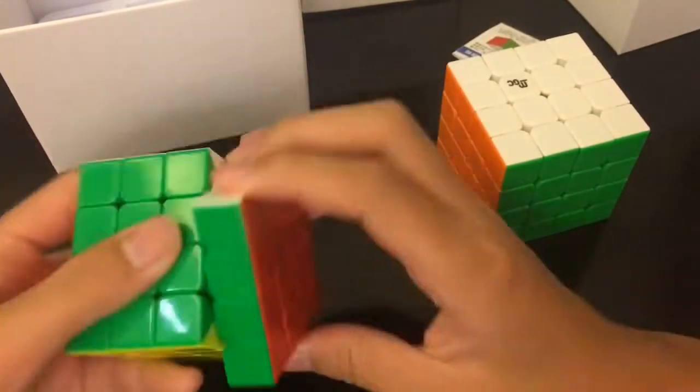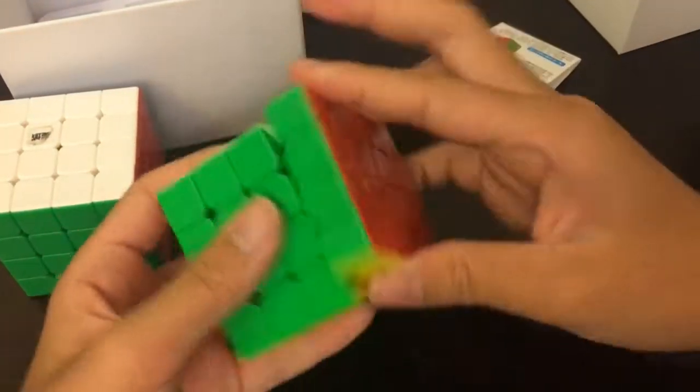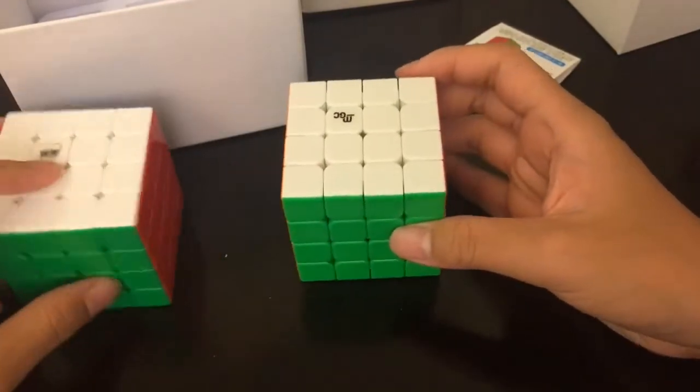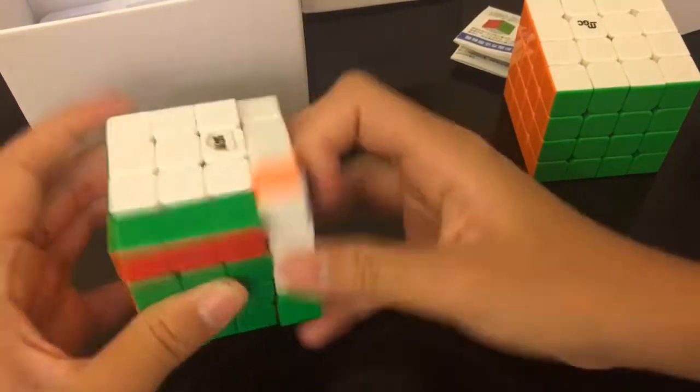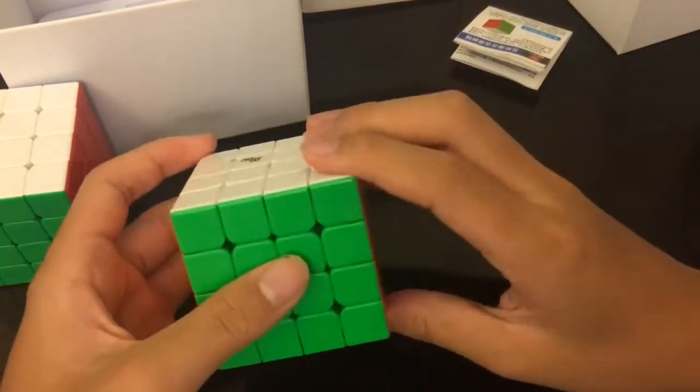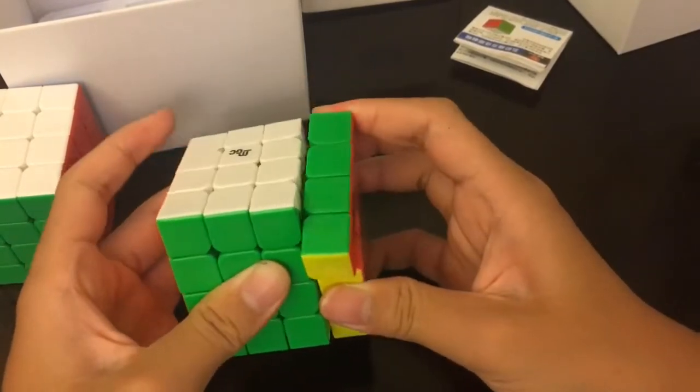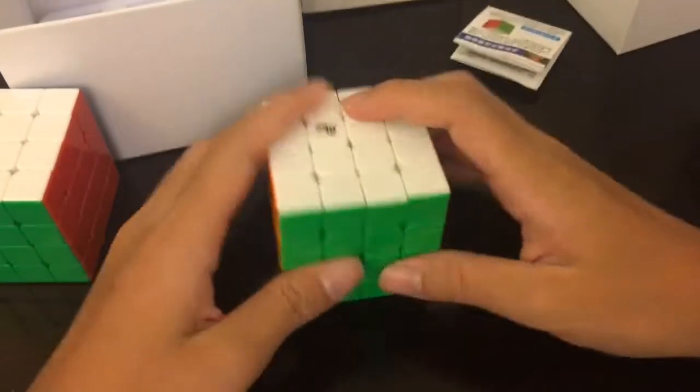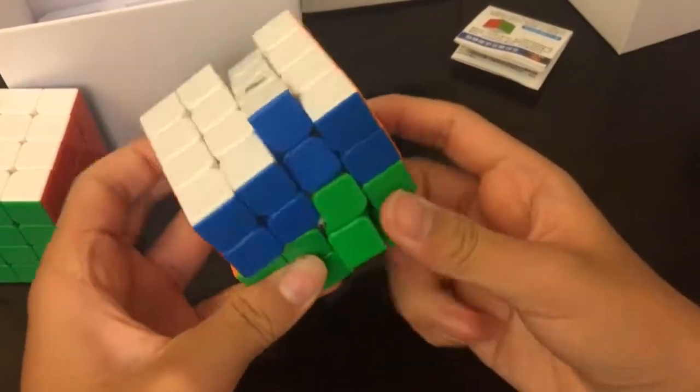Compared to the best 4x4 on the market right now, the AOCHUANG WRM, there are a few similarities and differences. The MGC 4x4 is definitely a lot faster than the AOCHUANG WRM, but it's a bit uncontrollable, just a little bit. The WRM is smoother to turn and easier because of better corner cutting. MGC 4x4, sometimes if you don't turn accurately you might get punished, like you cannot turn the U right now because I didn't complete the R turn.